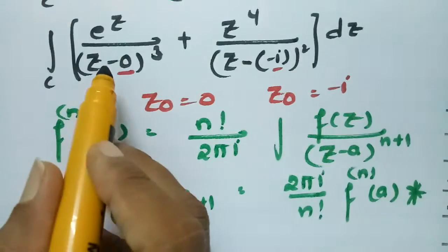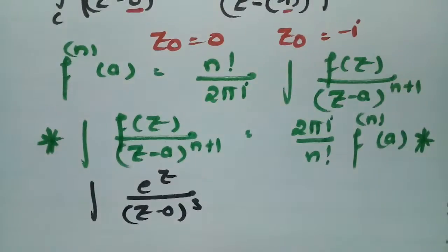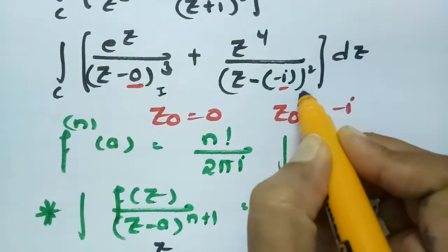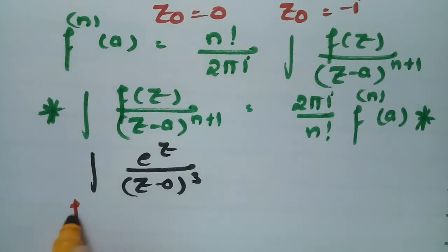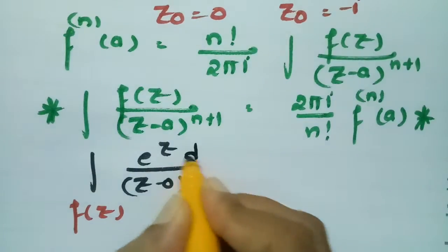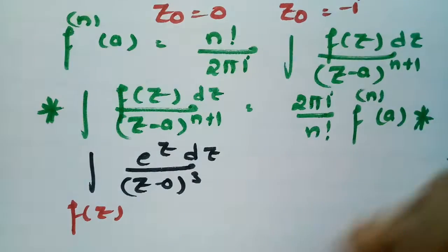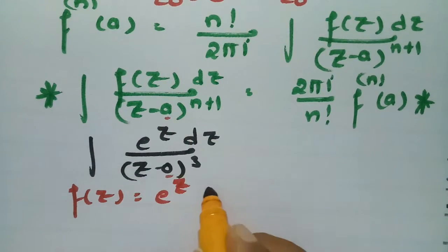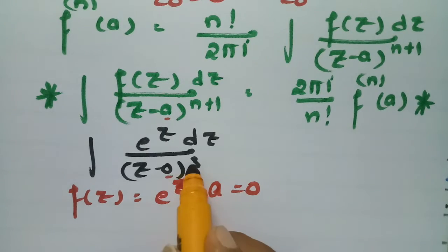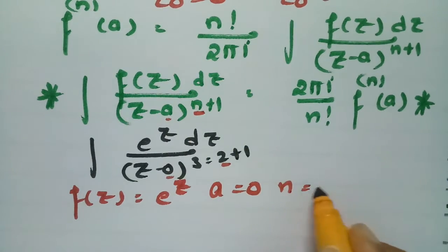For the first integral: ∫ e^z / (z − 0)³ dz. Comparing with the formula, f(z) = e^z, a = 0, and since the power is 3 = 2 + 1, we have n = 2.